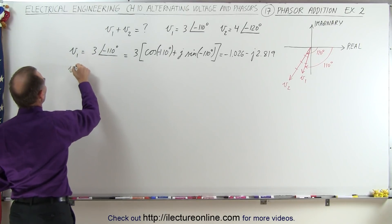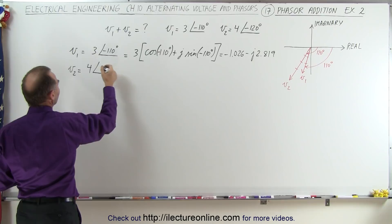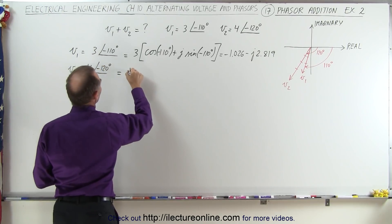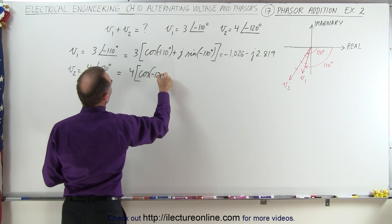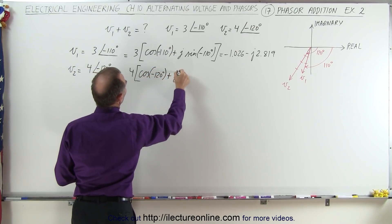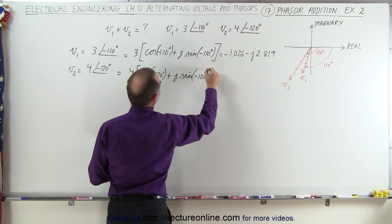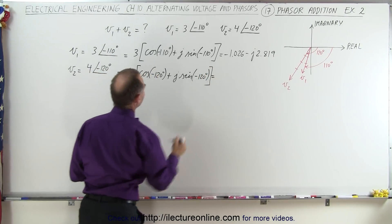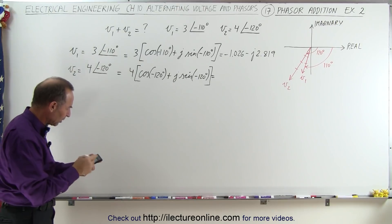We're going to do the same for V2, which is equal to 4 with a phase angle of minus 120 degrees, which is equal to 4 times the cosine of minus 120 degrees, plus j times the sine of minus 120 degrees. So we take the cosine of a positive 120 degrees, because that's same as the cosine of a negative 120, times 4, which is minus 2.000.